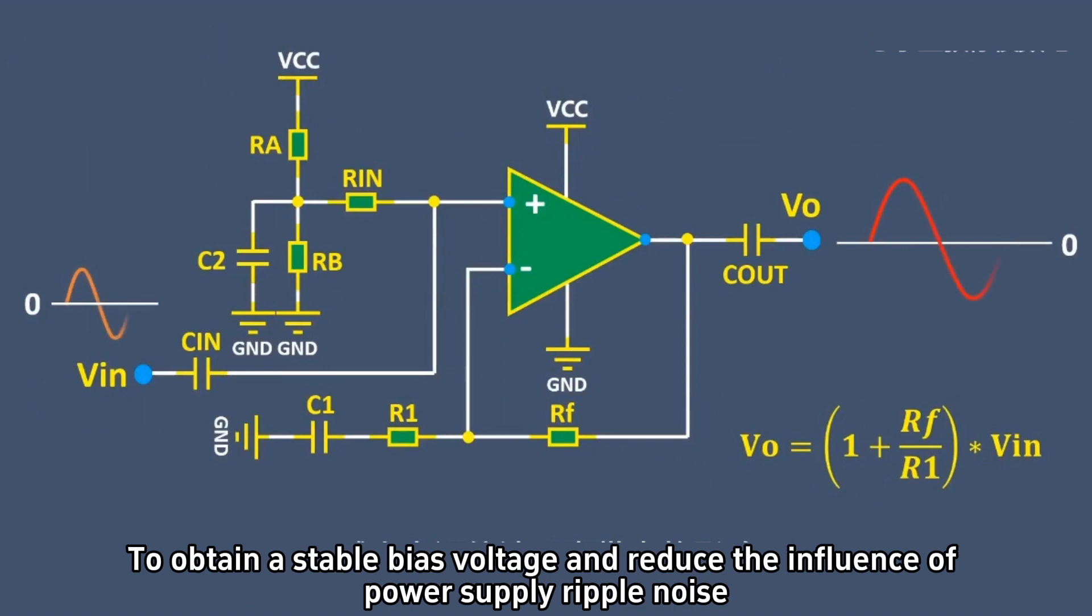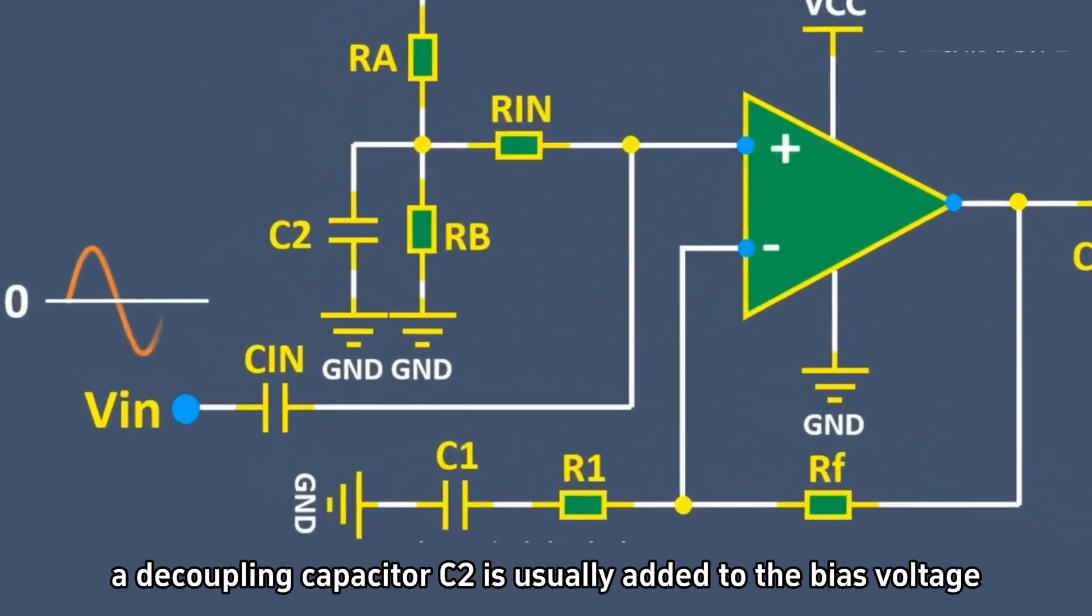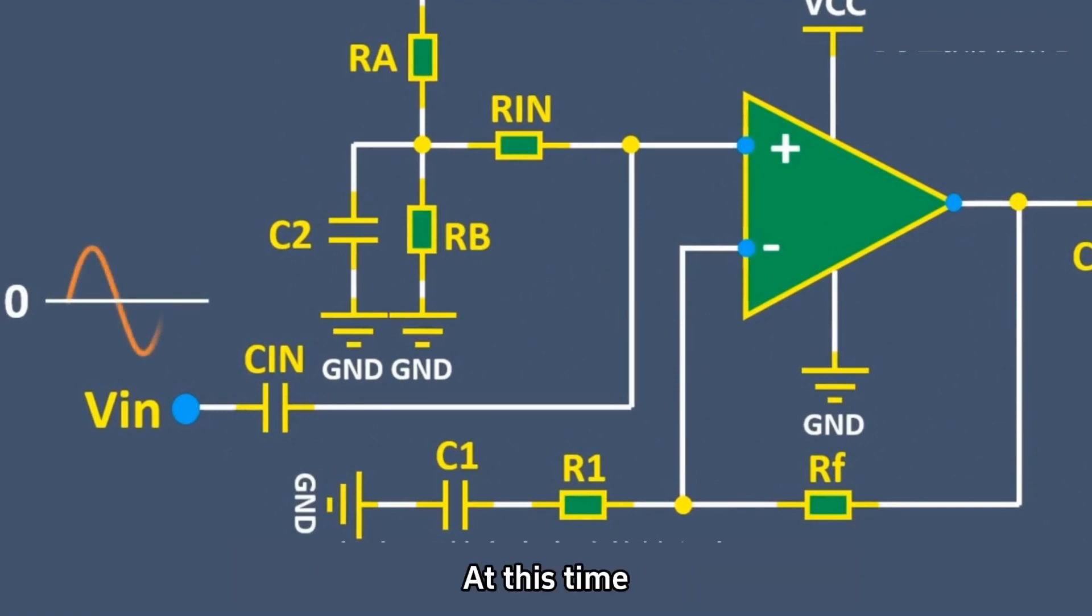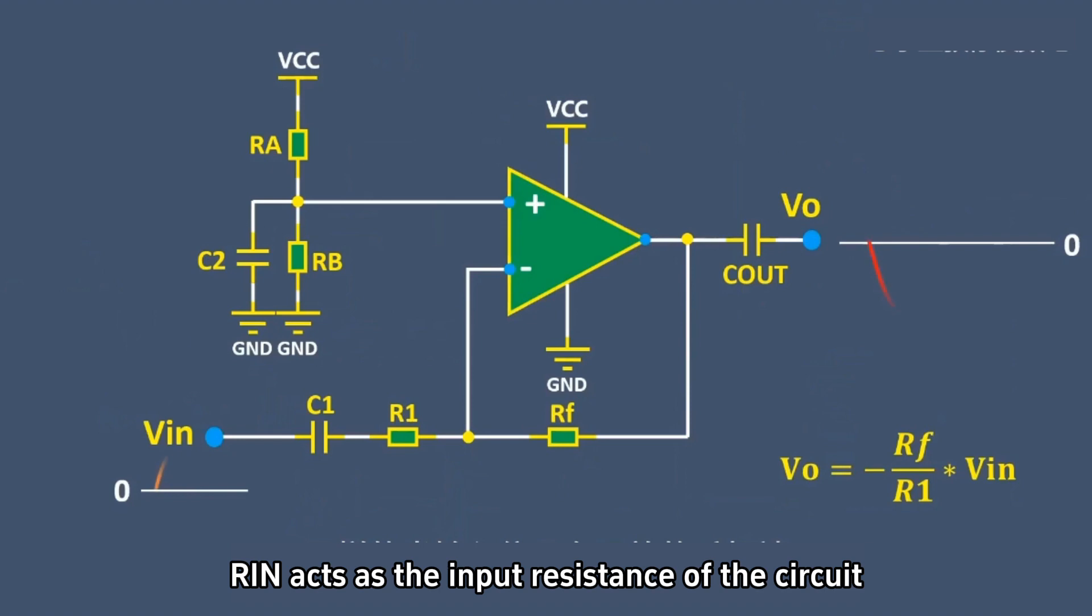To obtain a stable bias voltage and reduce the influence of power supply ripple noise, a decoupling capacitor C2 is usually added to the bias voltage. At this time, RIN acts as the input resistance of the circuit.